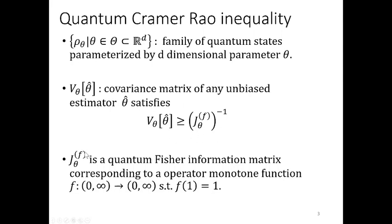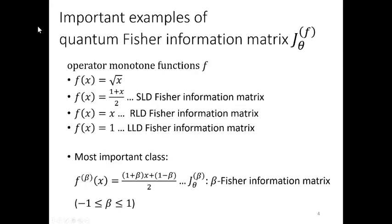These are important examples of quantum Fisher information matrix. When operator monotone function f is like this, Jf is SLD Fisher information matrix. If f is like this, J is RLD Fisher information matrix.